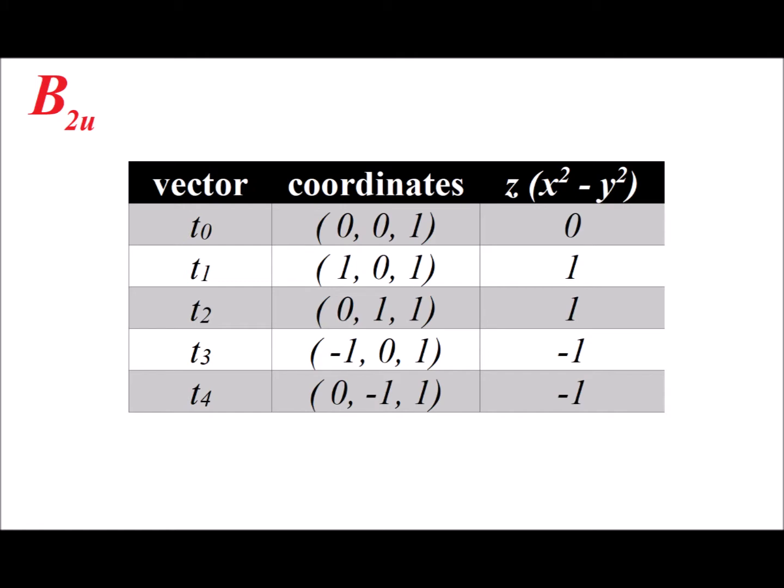We evaluate the basis function, we plug the coordinates of our vector into the basis function, and that gives us the coefficient for each vector. t0 has a coefficient of 0, t1 and t2 have a coefficient of plus 1, and t3 and t4 have coefficients of minus 1.